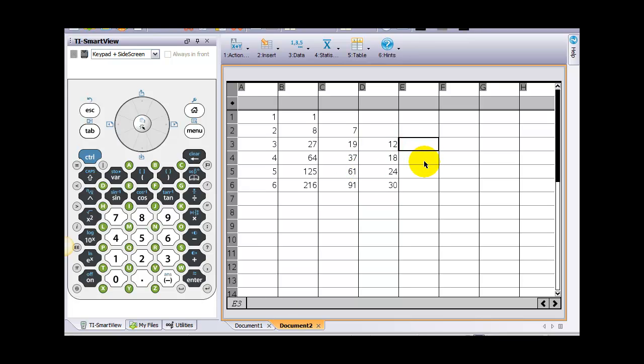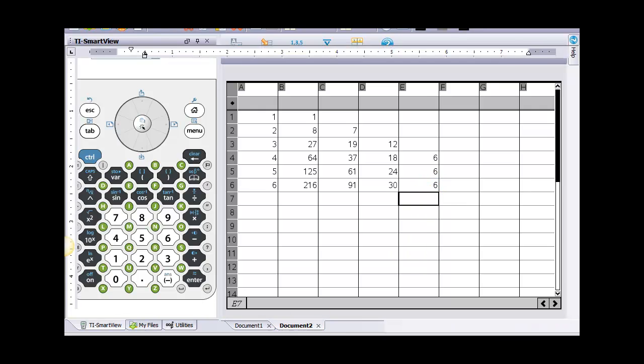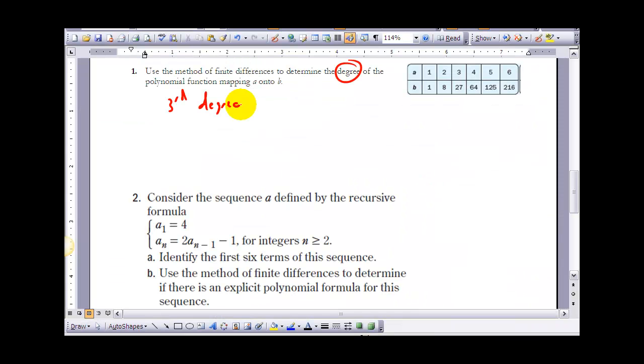So the first set of differences were not equal, the second set of differences are not equal. But on the third set of differences, 18 minus 12 is 6, 24 minus 18 is 6, 30 minus 24 is 6. So each of those is, the difference is 6. Therefore since the third set of differences is equal, the exact model for that particular set of data.